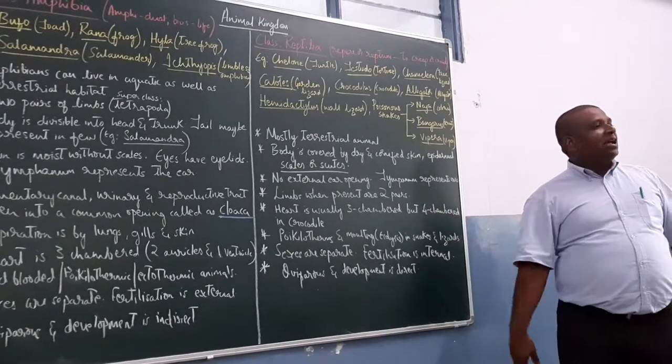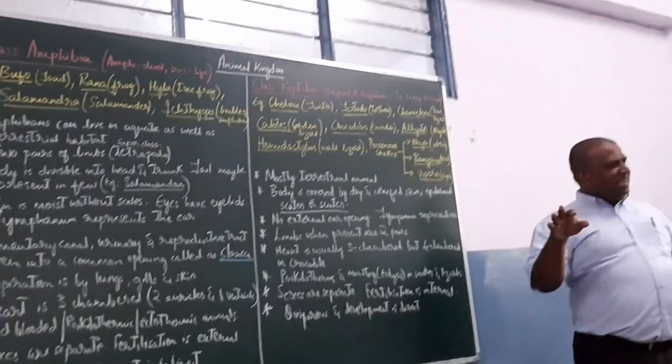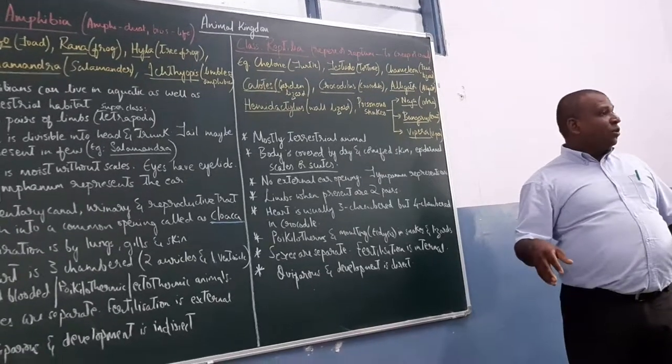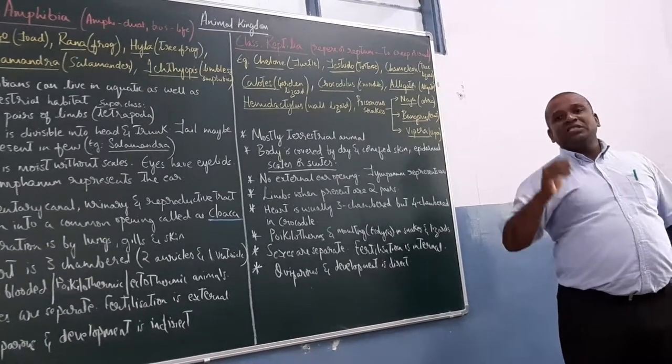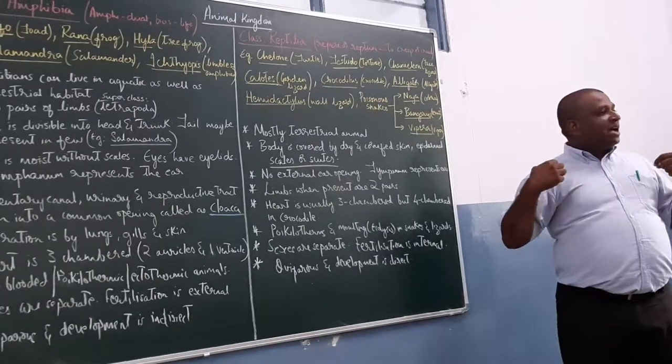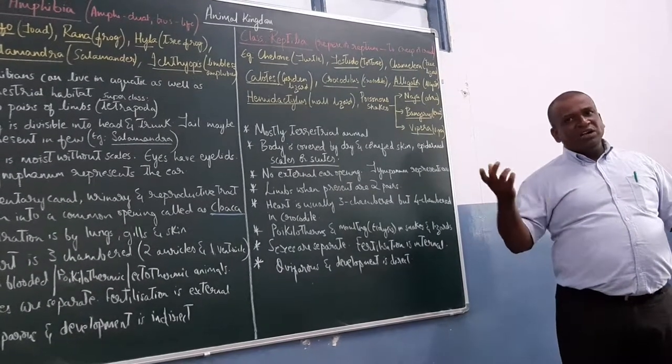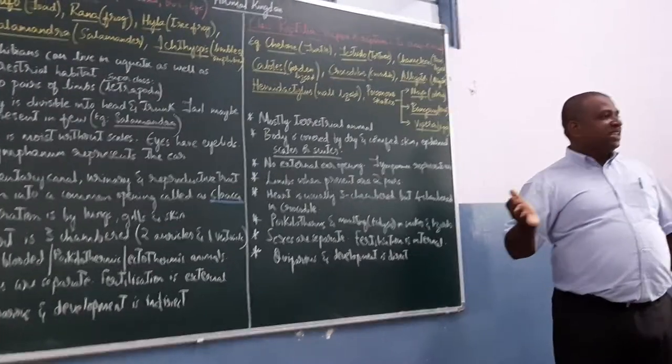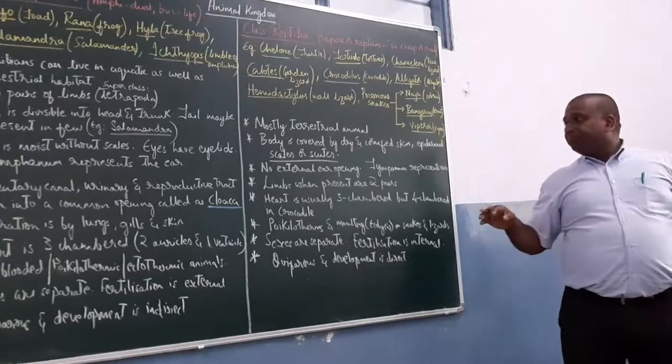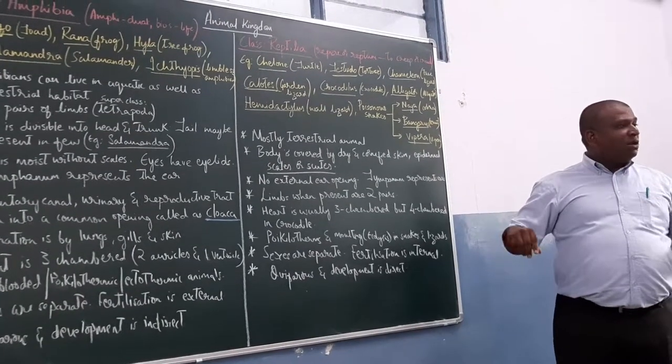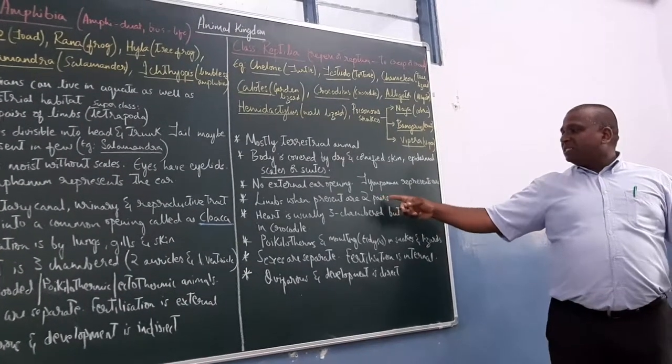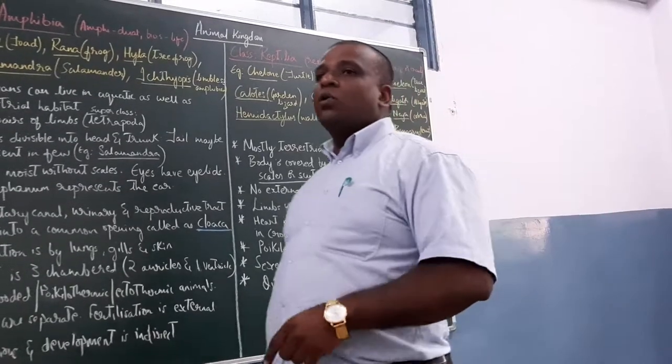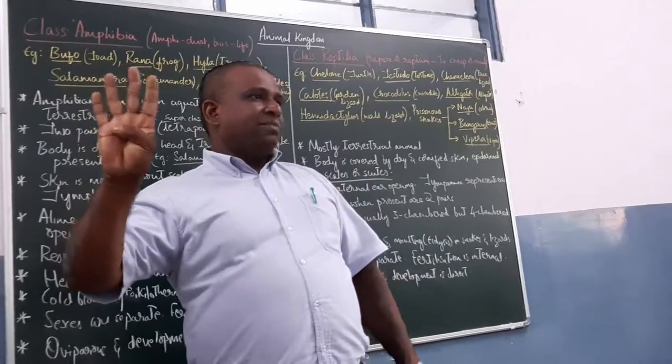Limbs when present are two pairs. You might have seen in lizards, they are having two pairs of legs. They have tail also. But snakes, they don't have limbs. Limbs are reduced. When we come to organic evolution, we will discuss about that. Limbs are reduced in case of snakes. They crawl. Limbs when present are two pairs. Heart is usually three chambered in reptiles. Except for crocodile which has four chambers.